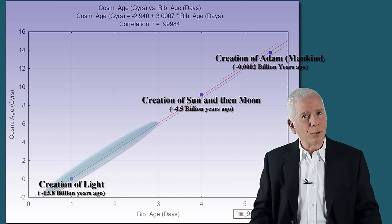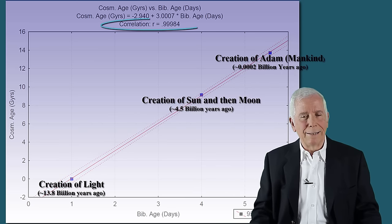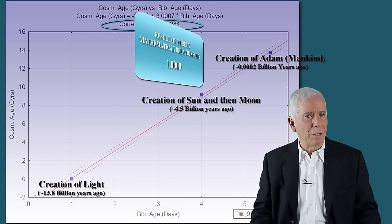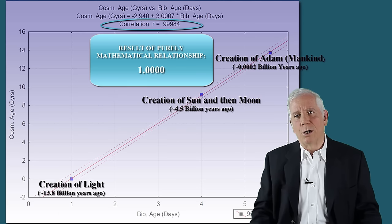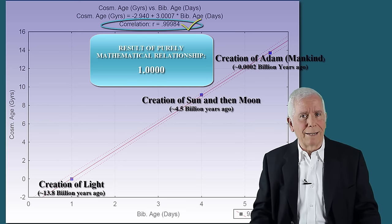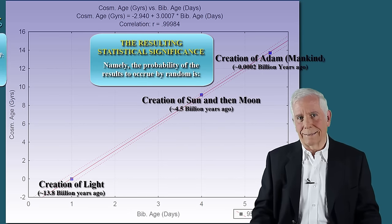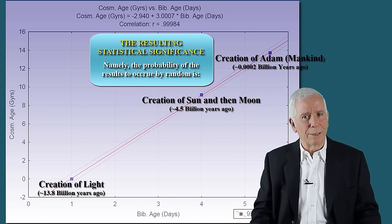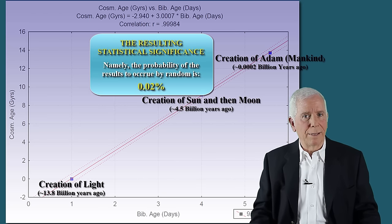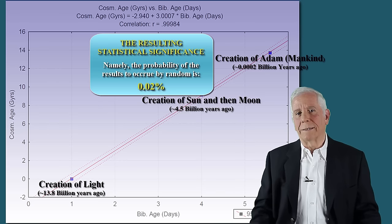Consider that the linear correlation is 0.9998. If the points had maintained a truly mathematical relationship, the linear correlation would have been 1.0000, and here 0.9998. The resulting statistical significance, namely the probability of the results to occur by random, is 0.02%, namely, two hundredths of one percent, low probability by all accounts.